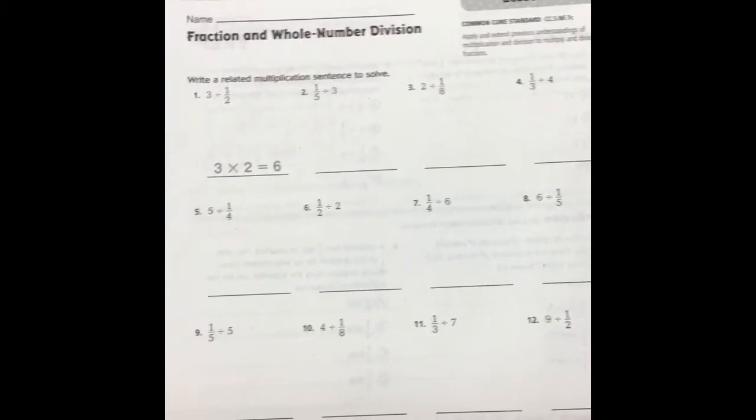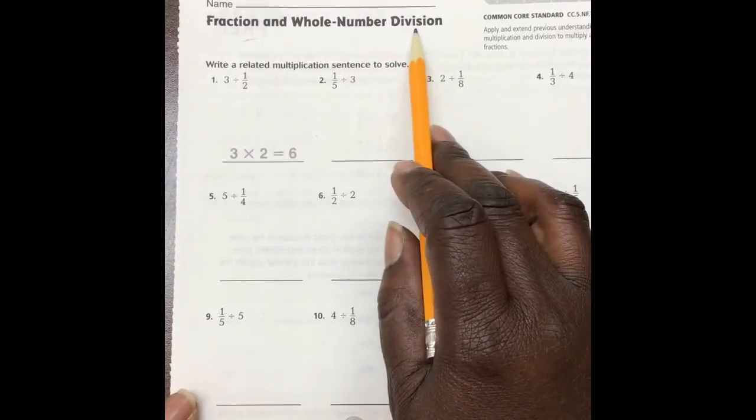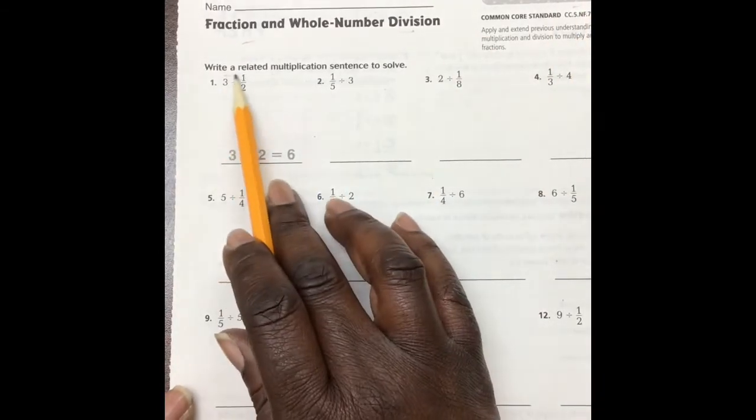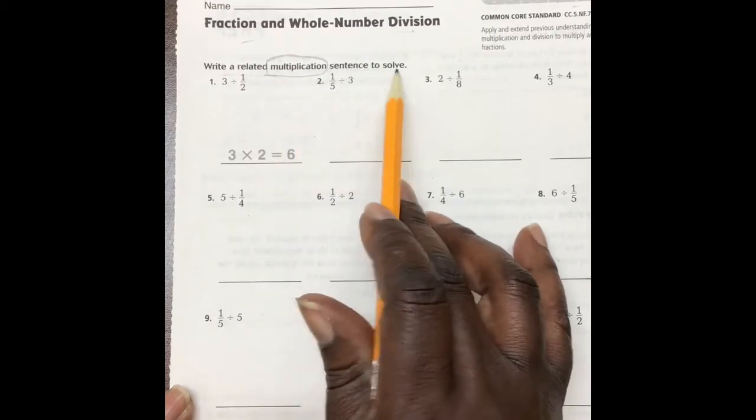Okay, today, a fraction and whole number division, 8.4. It says write a related multiplication sentence to solve. Let's take a look.